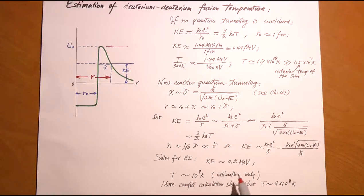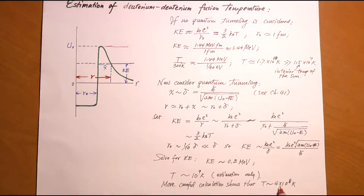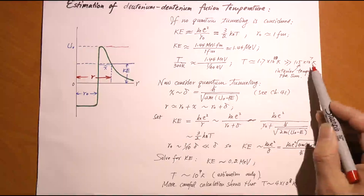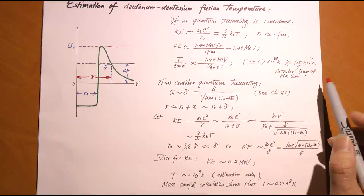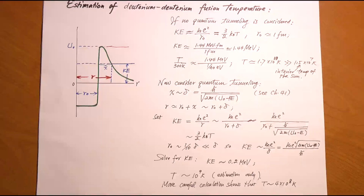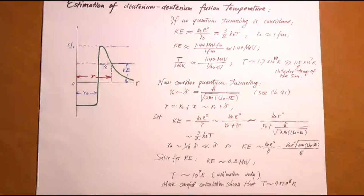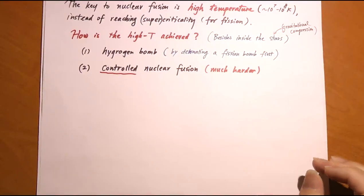This estimation is not very accurate, but a more careful calculation shows the actual temperature needed for deuterium-deuterium fusion is about 4 × 10^8 kelvin—still higher than the 15 million kelvin at the center of the Sun, which primarily runs on the proton-proton cycle. In the Sun, higher particle concentration allows fusion to be sustained at a somewhat lower temperature. The key point is that the key to nuclear fusion is high temperature: roughly 10^7 to 10^8 kelvin.